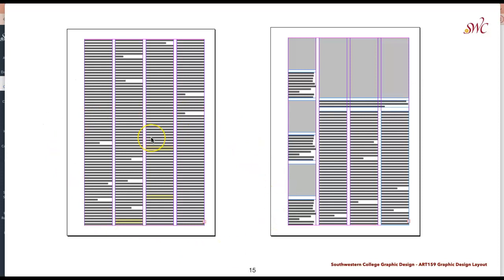Here we can see an absence of white space but versatility within the hierarchy being used within these grids — whether creating four different columns or spanning them to create different spatial zones broken up with images. The information on the left page seems very dense and hard to navigate, but on the right it starts to break that up and make it easier to read.